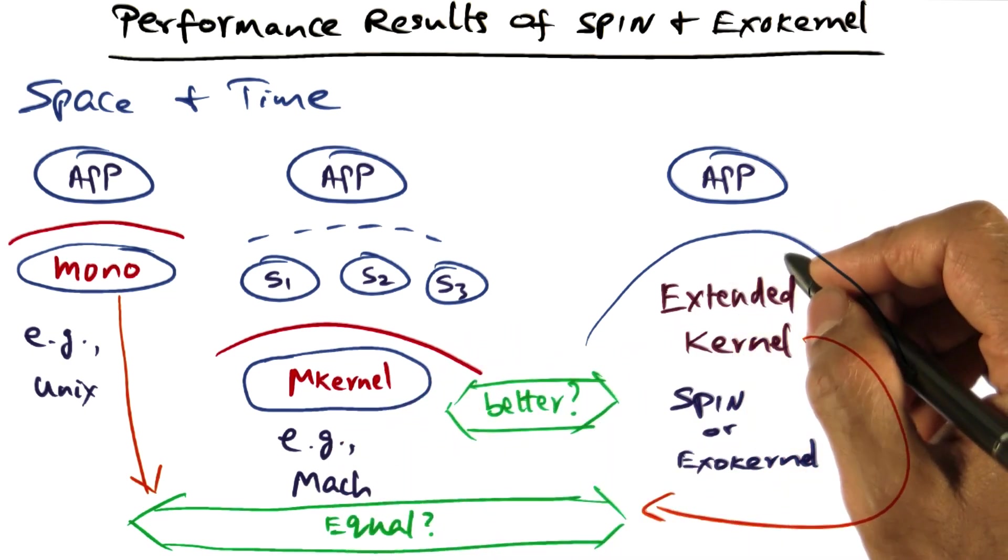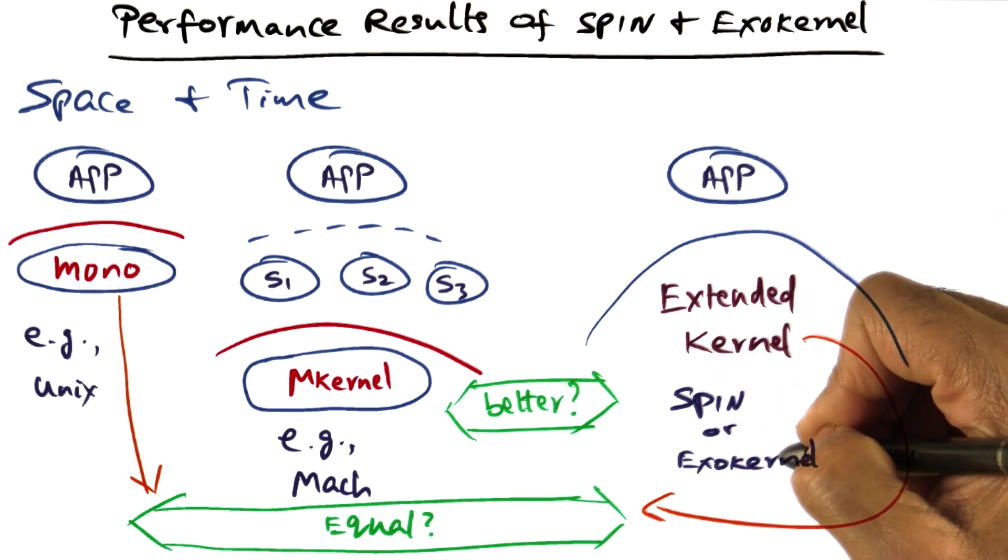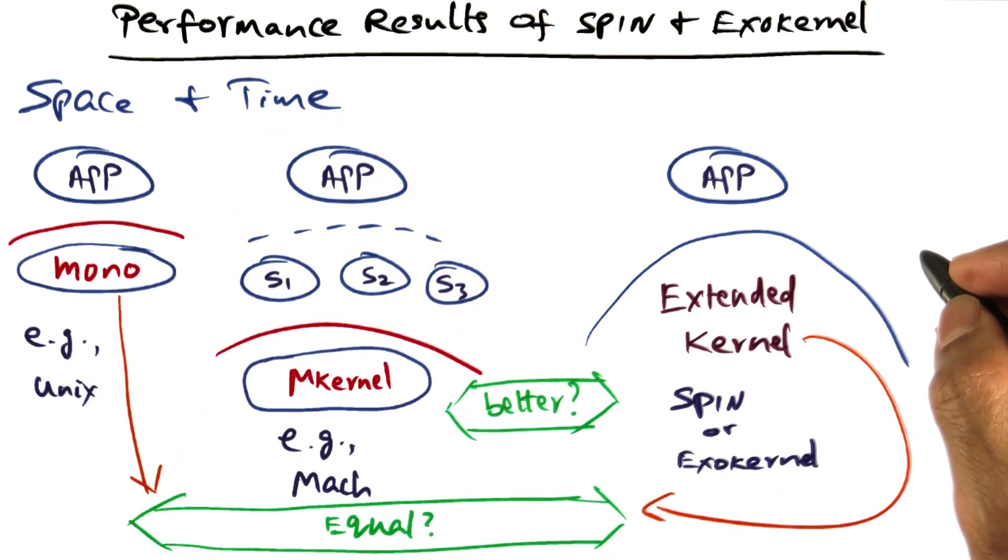And you'll also see that both spin and exokernel do as well for dealing with system calls as a monolithic kernel does.